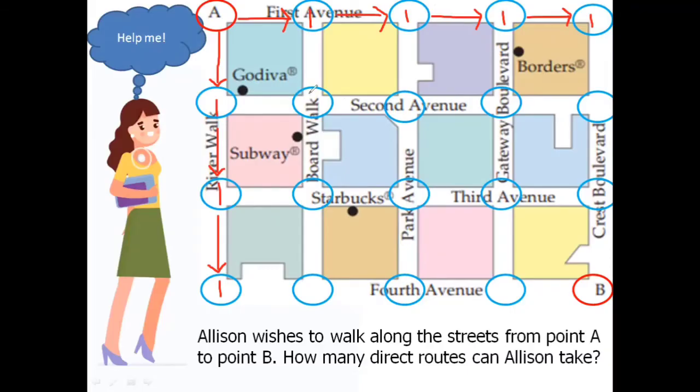Now, how about if she wanted to go to this intersection? All we need to do is we will just add the two adjacent routes. So one route plus one route, that will give us two routes. How about here? So we have one route there and two routes here on the left side. Then that will give us three routes. Here, we have one route here and three routes on the left side that will give us four routes. And one route there and four routes on the left side that will give us five routes in this area.